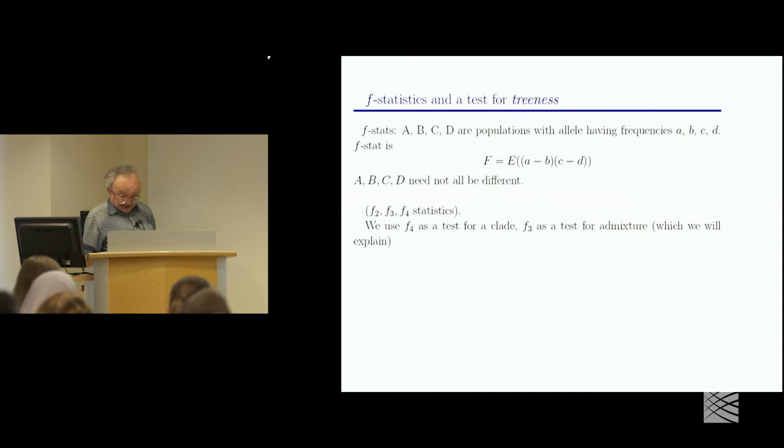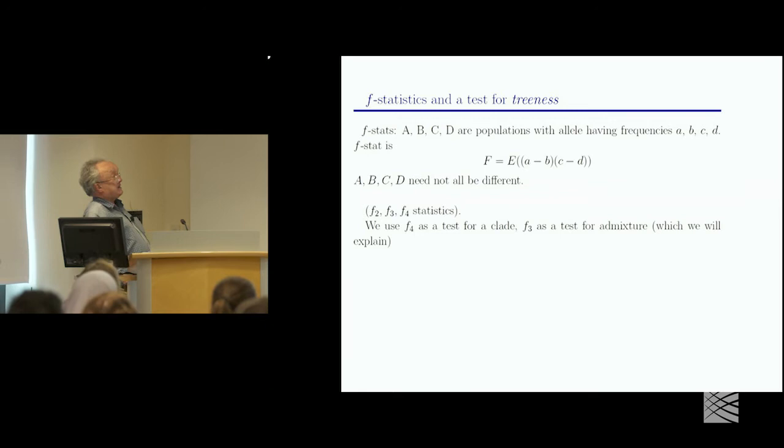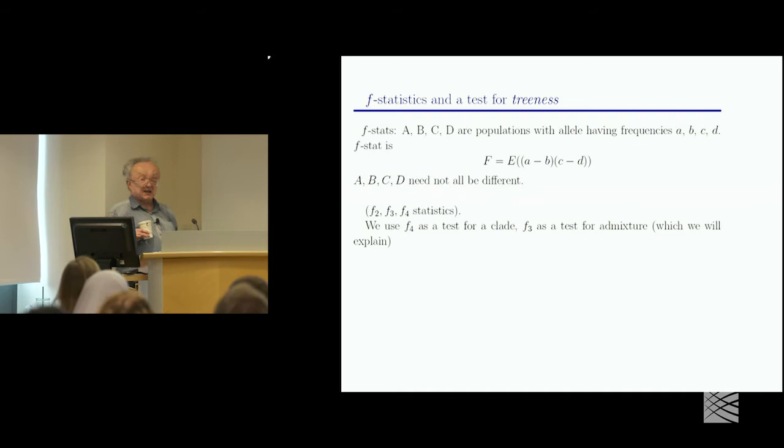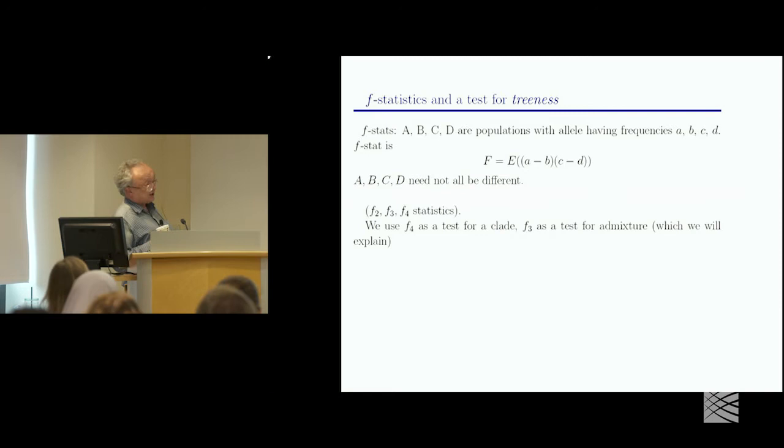All right. So let's talk about F-statistics to start with. So I've got ABCD in caps, our populations, with alleles having frequencies, little a, b, c, and d. Something that's not, something that's interesting and relevant is, I'm only talking about bi-allelic, I should have put on that, but I'm only talking about bi-allelic SNPs. There's some theory that's relevant to multi-allelic things like CNVs, but I'm not going to talk about that at all this time.